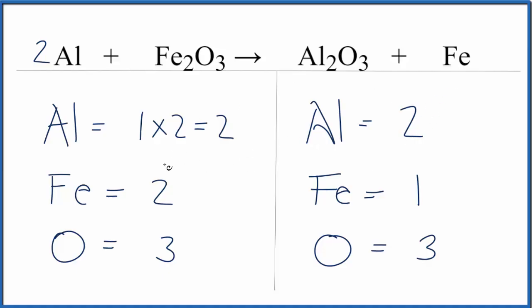Then over on the product side, iron, I have 1 over here on the products and 2 on the reactants. Put a coefficient of 2 in front of the Fe, 1 times 2. That'll give you 2. And now everything's the same on each side of the equation.